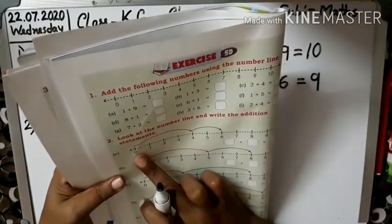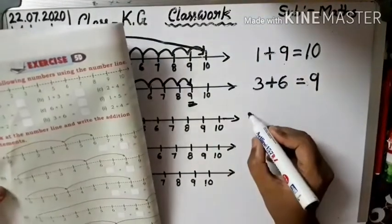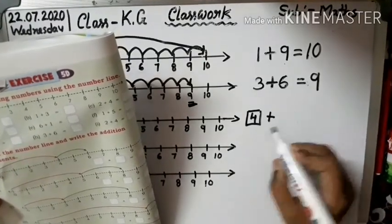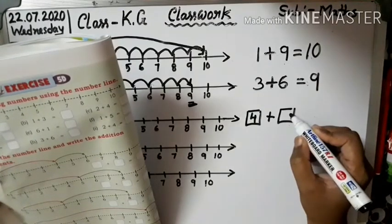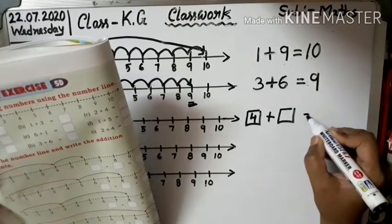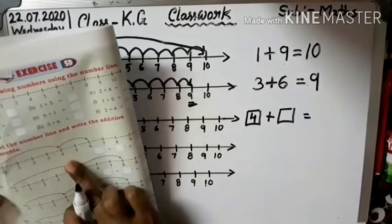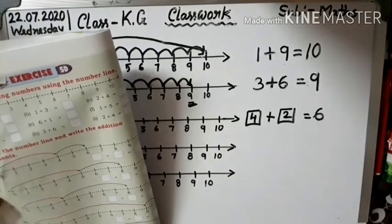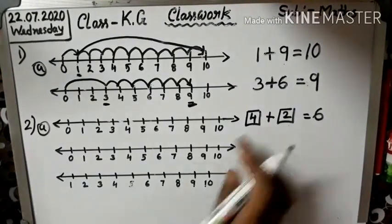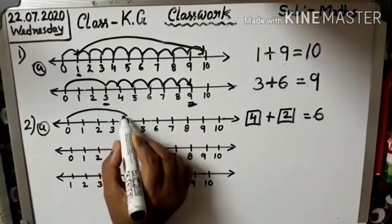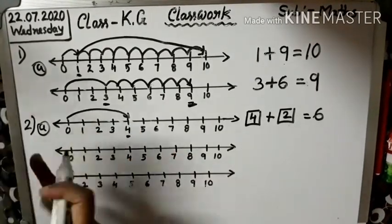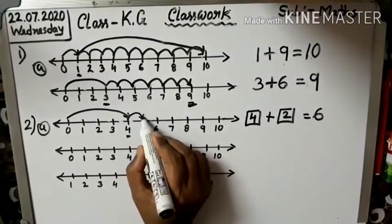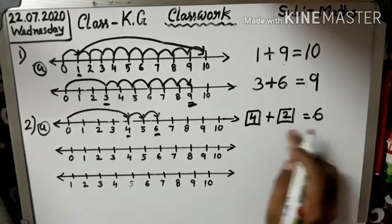A. See. Write here 4. Okay, right here 4. Then right here 2. Make 6. See, 4 — jump 2 steps: 1, 2. So make 6.